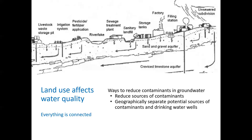Our overall message today is that land use choices affect water quality. Everything is connected. Any contaminant that is spilled or applied to the ground can seep down and eventually end up in the water table. Some do that more easily than others, depending on how well they dissolve in water. A couple of broad ways to reduce contaminants in groundwater are to reduce the sources of contaminants and to geographically separate potential sources from drinking water wells.